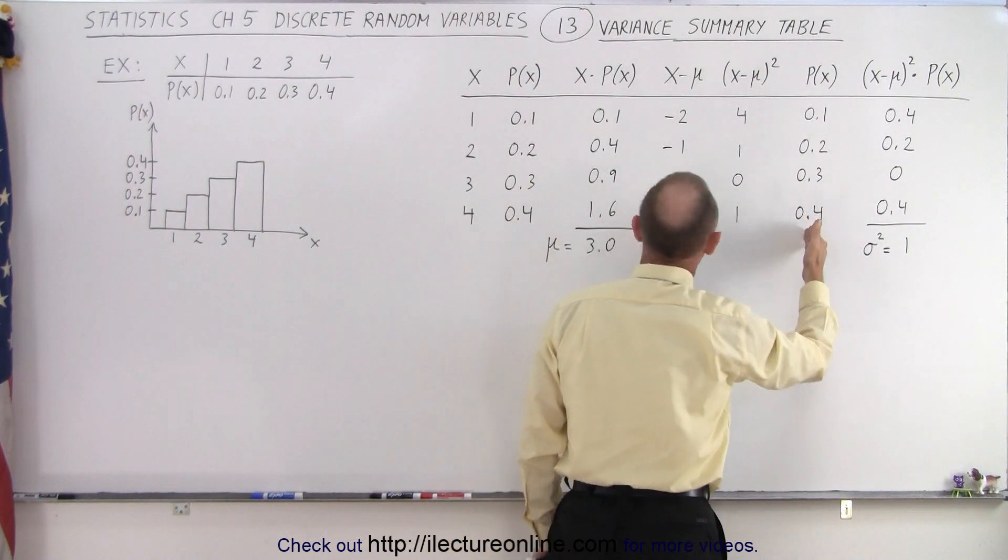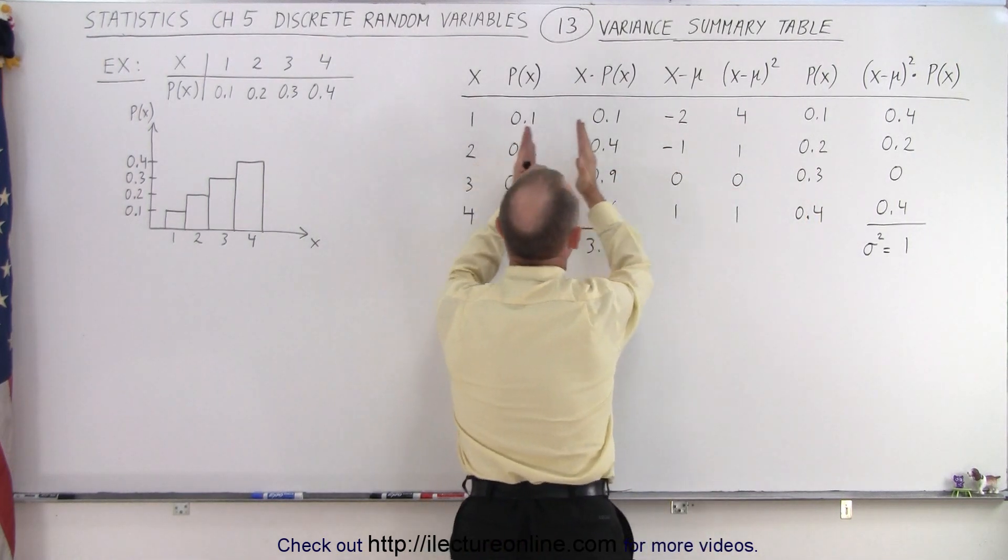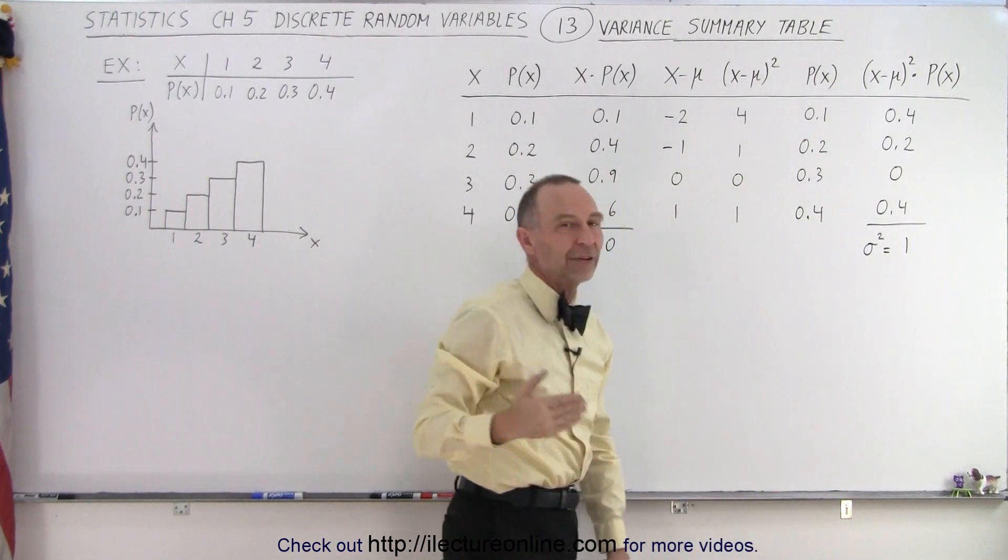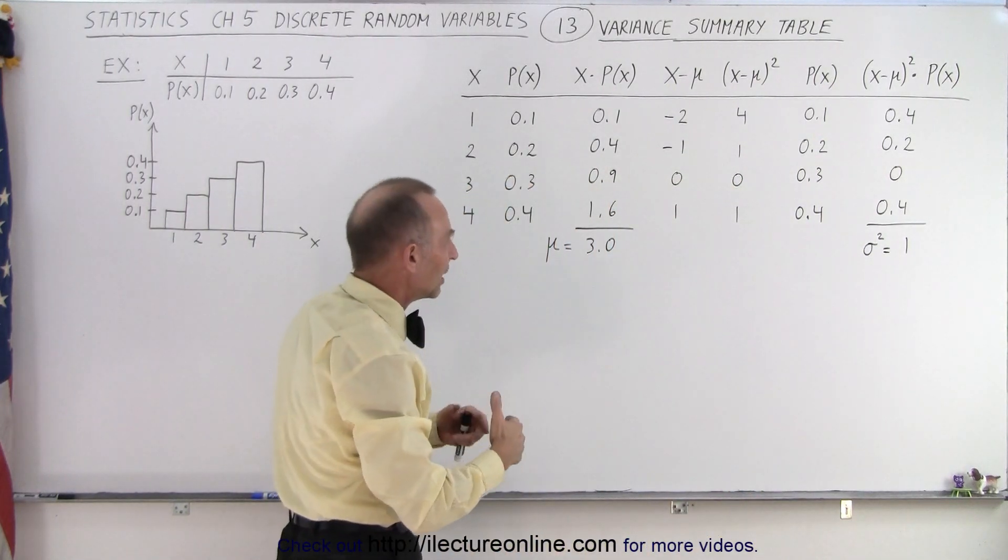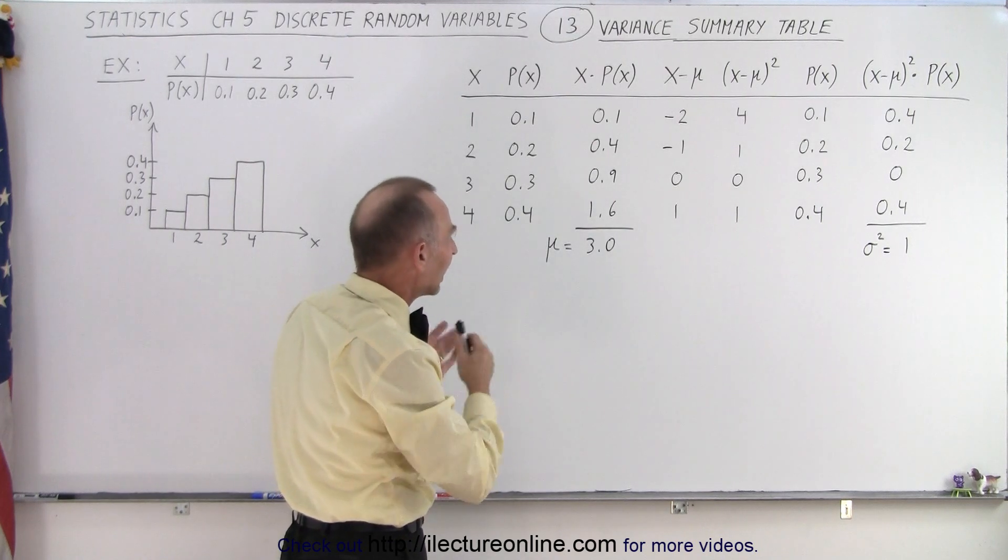And then we, for convenience, repeat the same column over here. We write the probabilities of each of the four values that x can be, the variable that x represents.